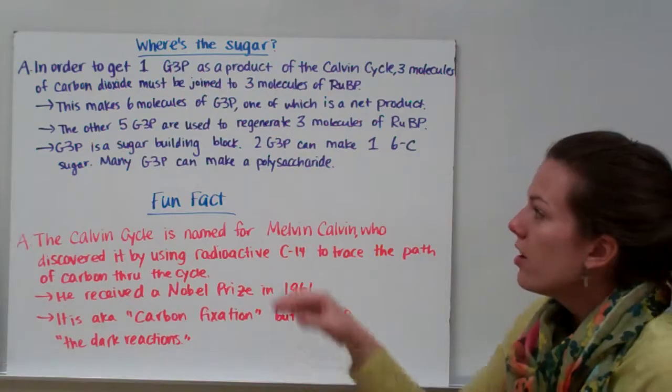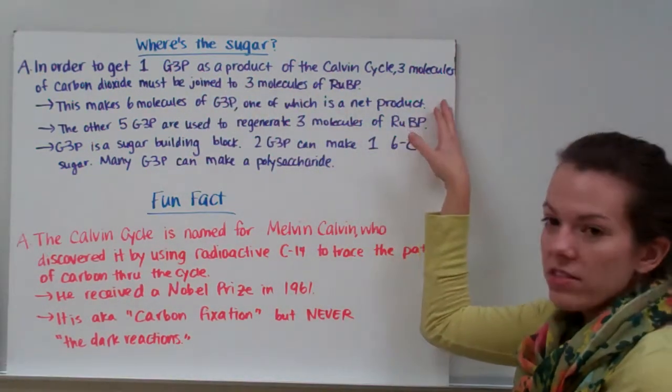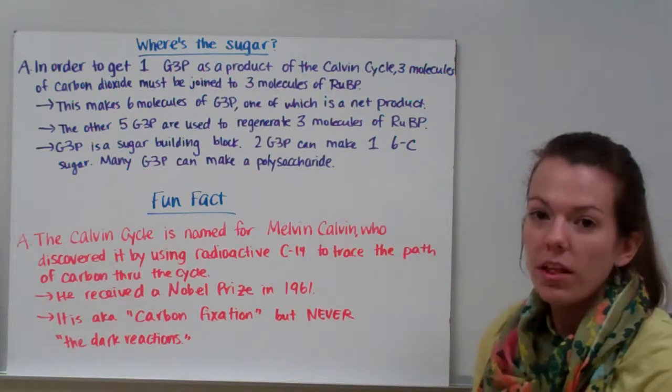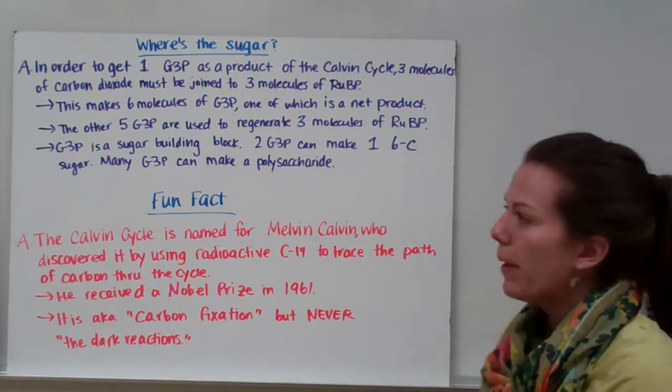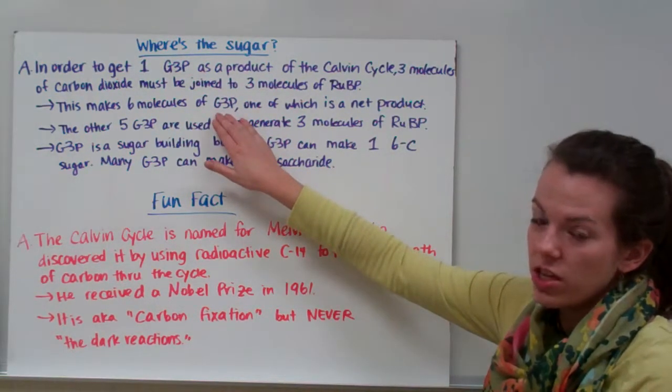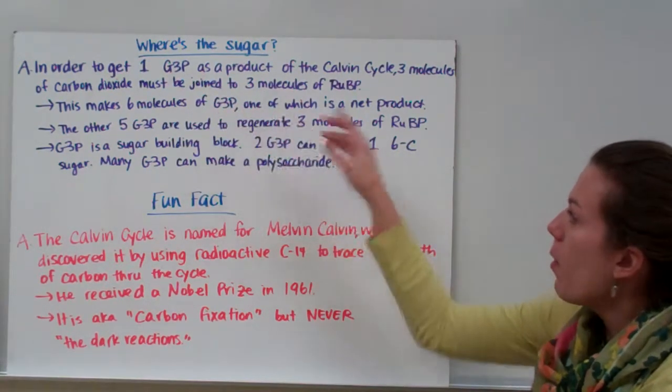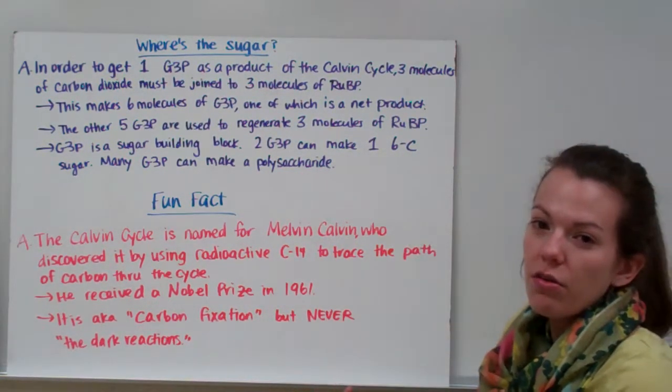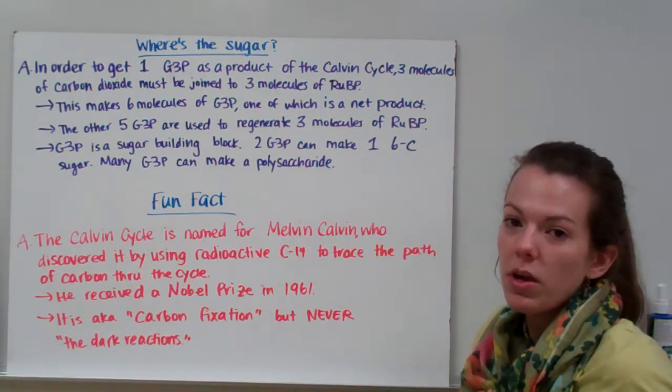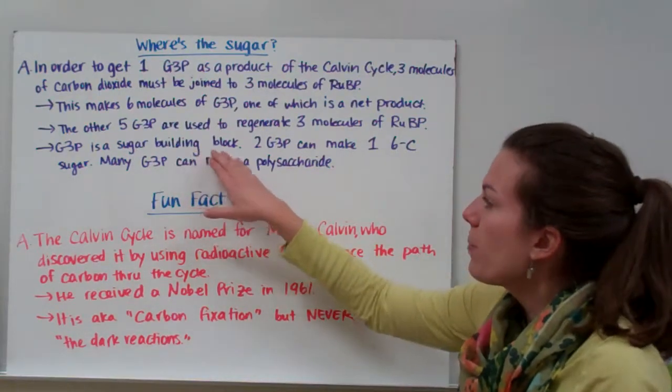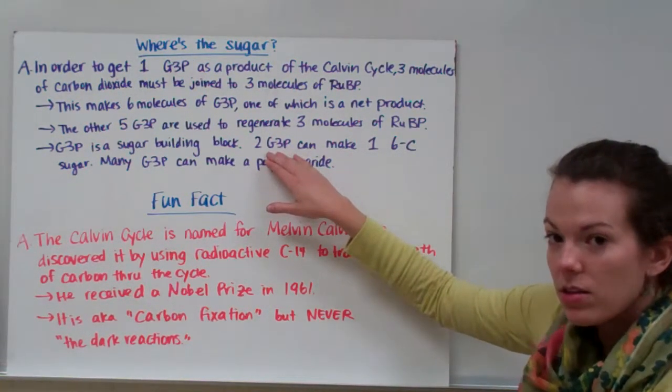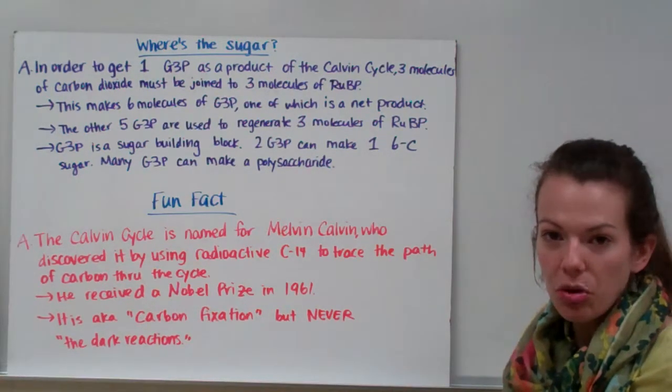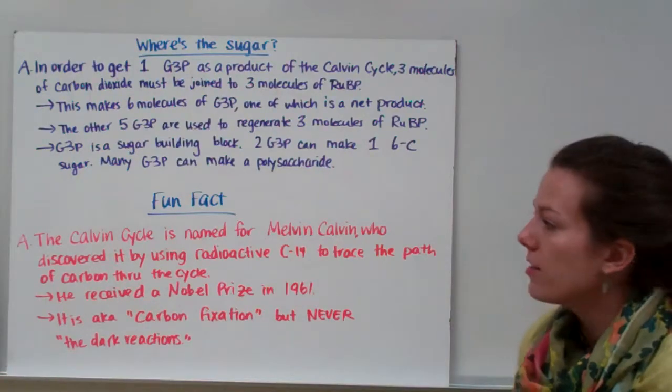So, you might be wondering, where's the sugar? In order to get one G3P as a product of the Calvin cycle, three molecules of carbon dioxide must be joined to three molecules of RUBP. For every G3P we make, we have to input three molecules of CO2 and three molecules of RUBP. This makes six molecules of G3P, but only one is a net product. The other five are used to regenerate three molecules of RUBP. G3P is a sugar building block. If we take two G3Ps, they each have three carbons in them—we can make a six carbon sugar. If we take a lot of G3P and put them together, we can make many different types of sugar, many different polysaccharides.